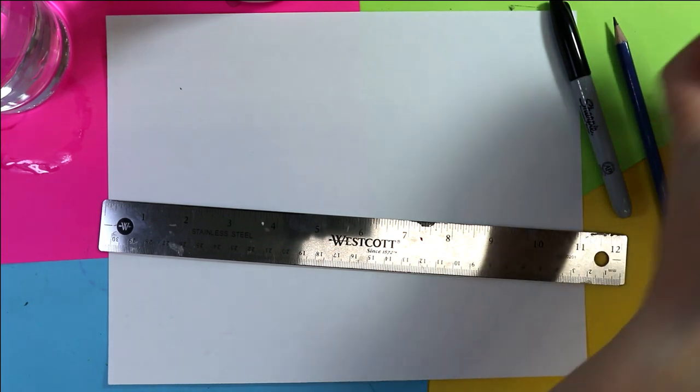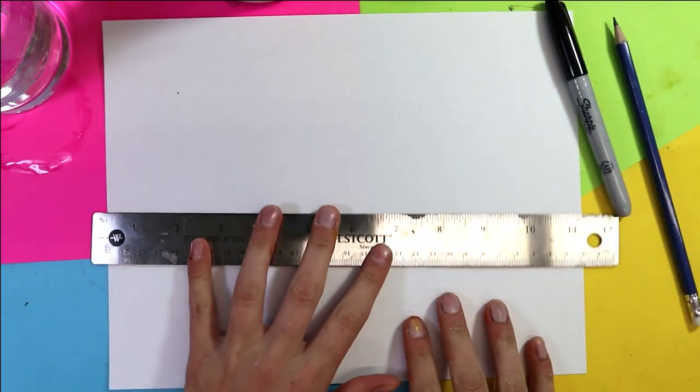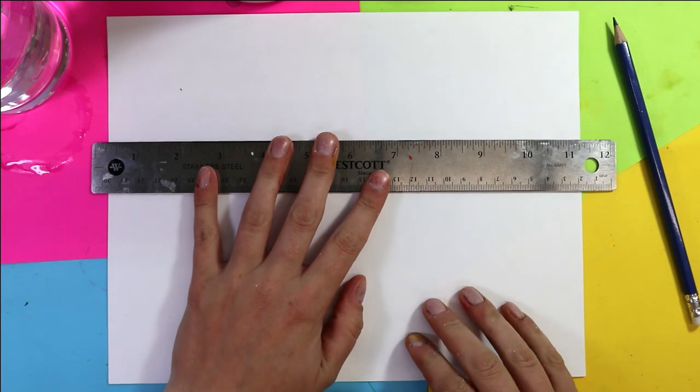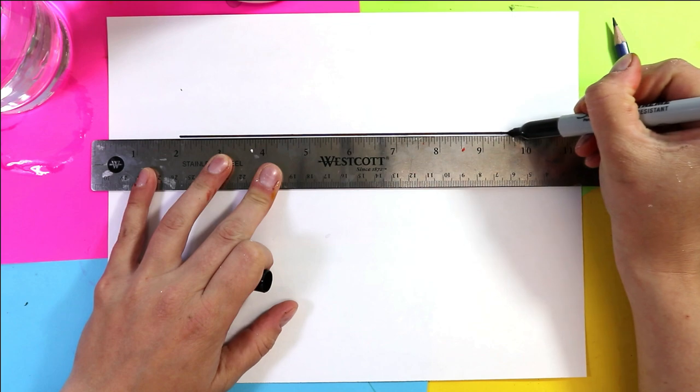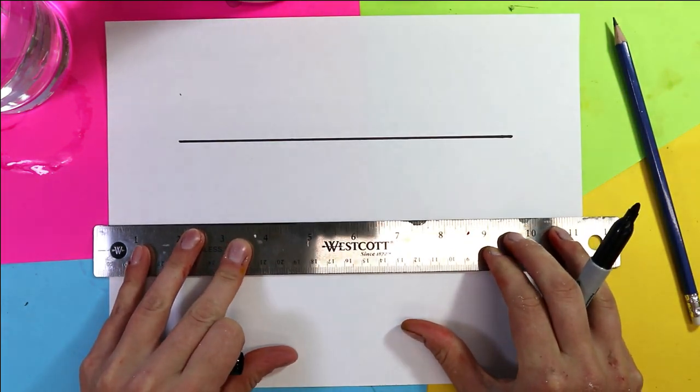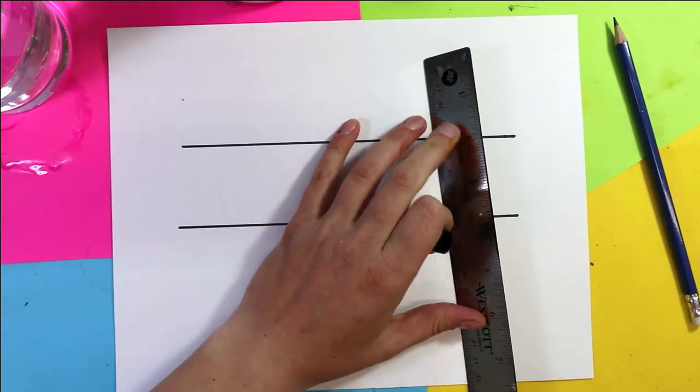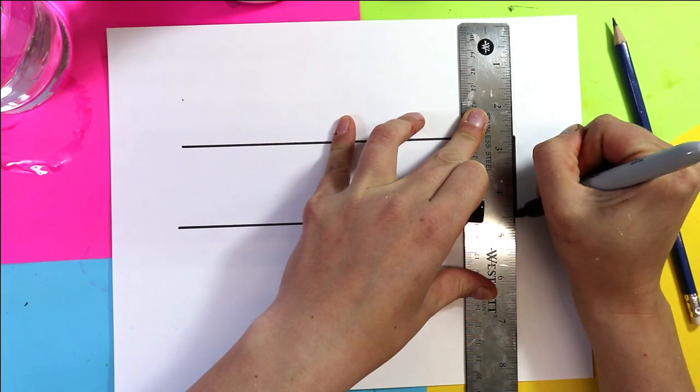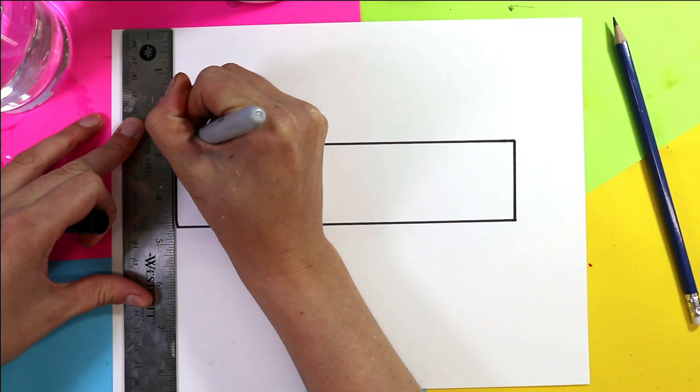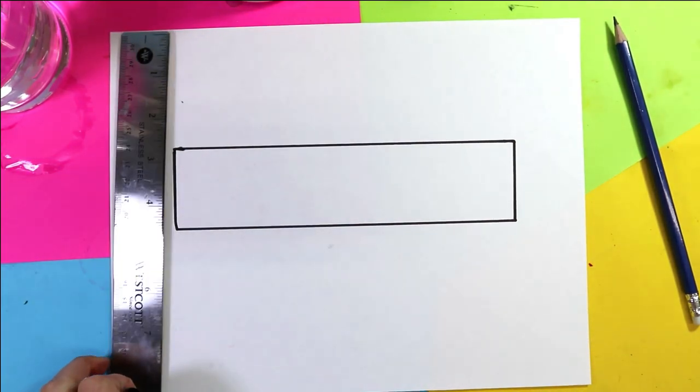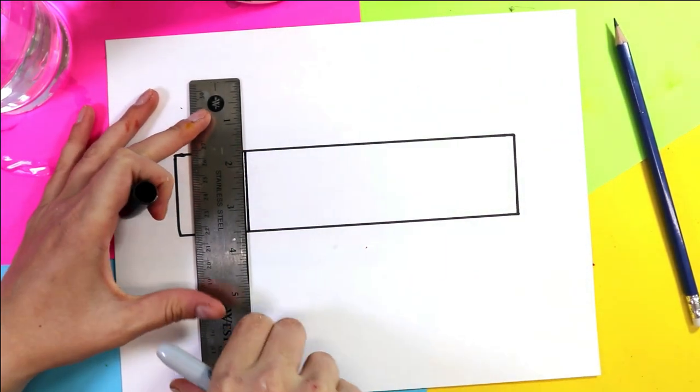So the first thing that you're going to need to do is find a ruler or you can just draw some boxes freehand on your paper, whatever you have. First I'm going to make myself a value scale that has five different separations. So I'm just going to make a long rectangle first and I'm just using black marker because that shows up well on a camera but you use what you have at home.